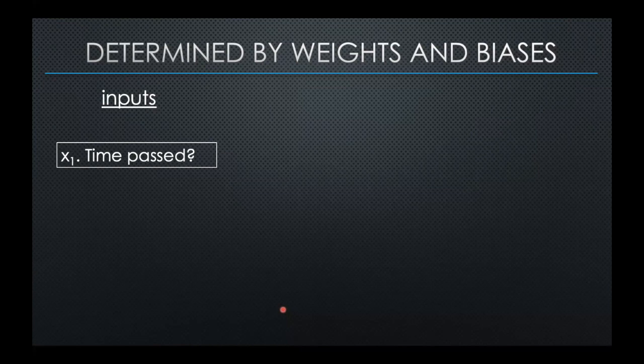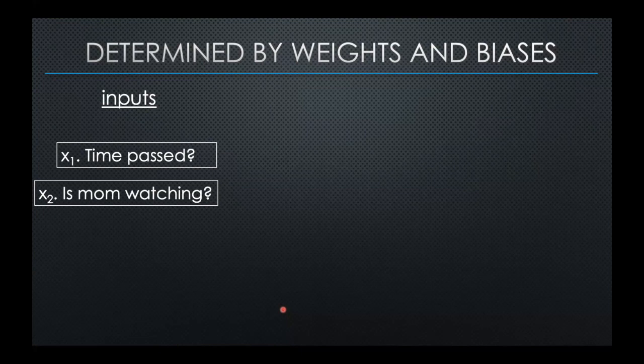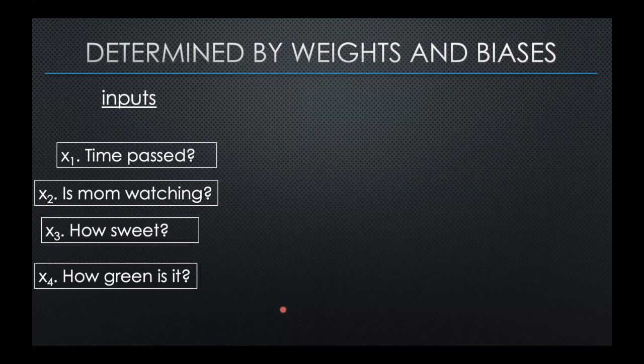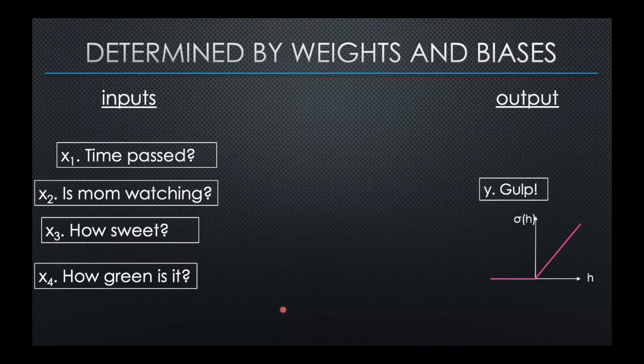The neural network is a function — once you have given weights and biases, it's definite. I often like to give an illustration comparing how a decision is made by the neural network versus how a decision is made by a kid. The kid takes inputs: how long has the food been on the floor? Is mom watching? How sweet is this food? How green is it? These are data the kid is taking, and the decision — whether to pick it up and eat it or not — is bimodal.